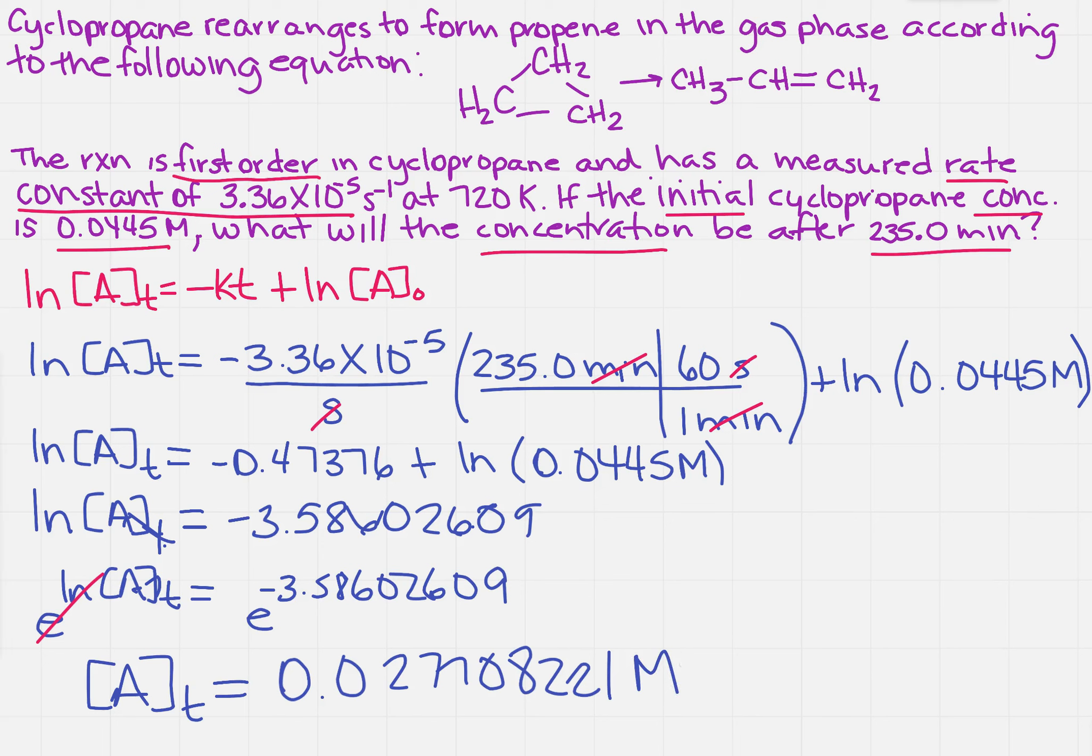Now how many significant figures do I need? Well, if you recall from the initial problem, we have 3, 4, 3, so I want 3. So I find the 7, I draw my arrow. So my final answer is 0.0277 molar.